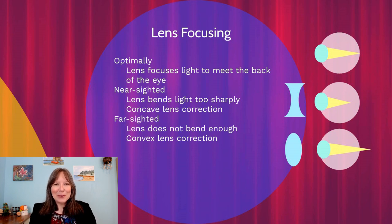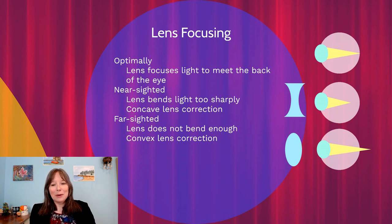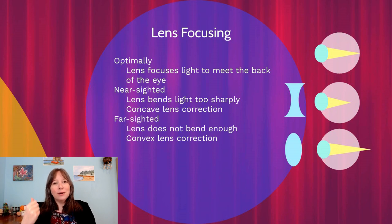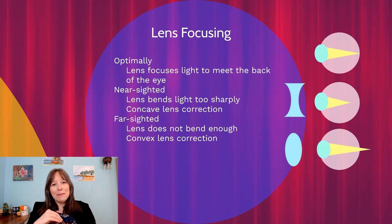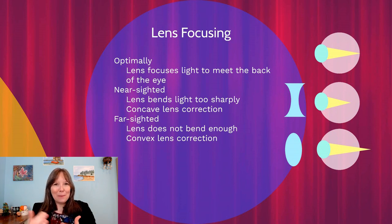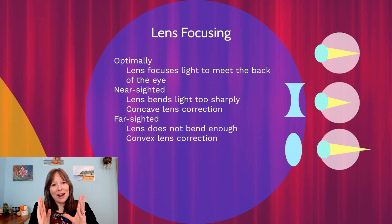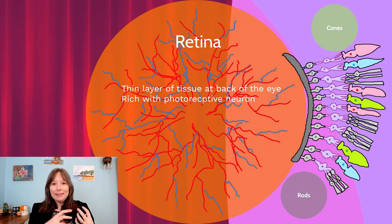Farsighted eyes have the opposite problem — light doesn't bend sharply enough and would hypothetically meet behind the eye, arriving blurry at the retina. Farsighted people can read things across the room but struggle to read a novel in their hands. A convex lens corrects this by making light bend more quickly so it meets at the back of the eye. The concave and convex lenses compensate for these conditions by reflecting light at different angles.